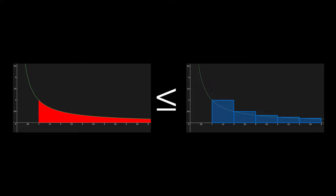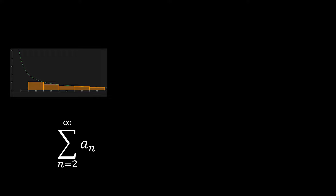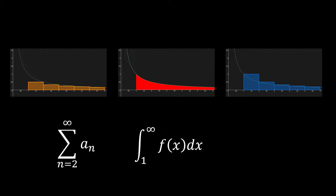Let's summarize what we discussed so far. The area of the orange rectangles is the sum of a sub n as n goes from 2 to infinity, representing the right Riemann sum. Since the first rectangle's height is a sub 2 instead of a sub 1, n starts from 2. The red area under the curve is the integral of f of x from 1 to infinity. Finally, the blue rectangles are the left Riemann sum, representing the sum of a sub n from 1 to infinity. Through these three figures, we can establish the following inequality relationships.